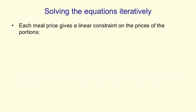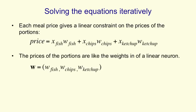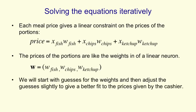Each meal gives you a price, and that gives you a linear constraint on the prices of the individual portions. The price of the whole meal is the number of portions of fish (x_fish) times the cost of a portion of fish (w_fish), and the same for chips and ketchup. The prices of the portions are like the weights of a linear neuron, and we can think of the whole weight vector as being the price of a portion of fish, the price of a portion of chips, and the price of a portion of ketchup. We start with guesses for these prices, and then adjust the guesses slightly so that we agree better with what the cashier says.